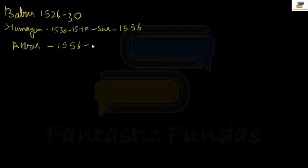Then came Akbar, from 1556 to 1605 — greatest of all Mughals. Ain-i-Akbari was a statistical account written by Abul Fazl. He built so many buildings: Fatehpur Sikri, Agra Fort, and Buland Darwaza, among many other things.